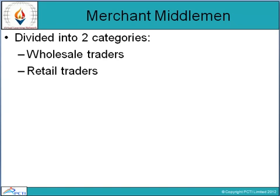Merchant middlemen can be divided into two categories: wholesale traders and retail traders. Wholesale traders buy goods from producers, manufacturers, or their agents and sell to industrial consumers or retail traders. Retail traders buy goods from wholesale traders and sell to the ultimate consumer.